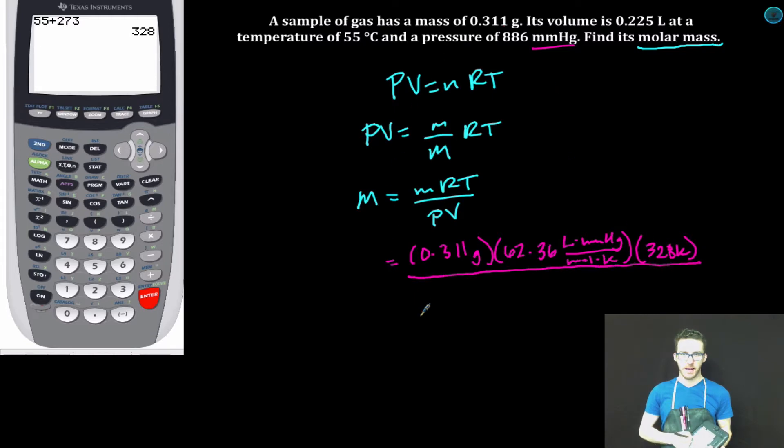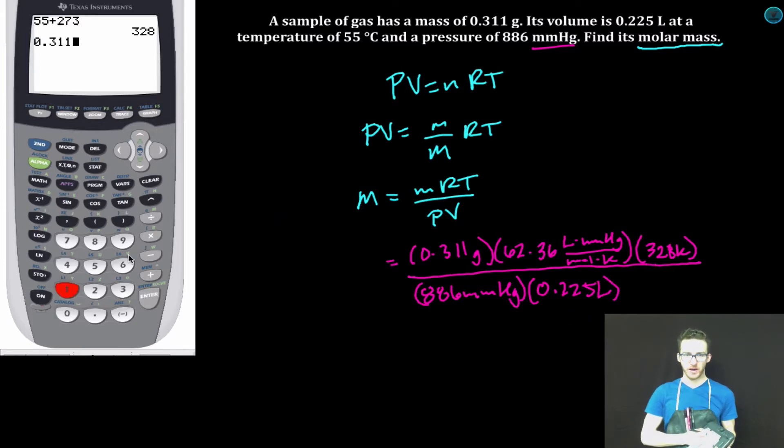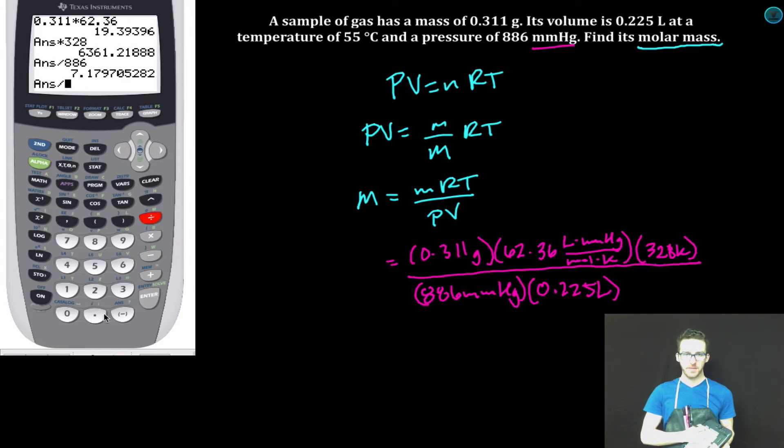Over my pressure, 886 millimeters mercury, times my volume in liters, 0.225. Now calculating: 0.311 times 62.36, times 328, divide by 886, divide by 0.225.